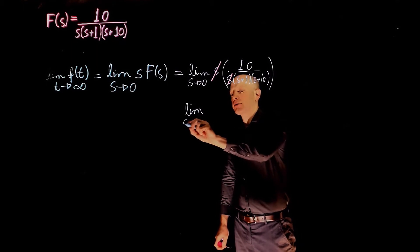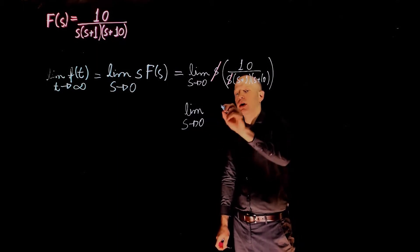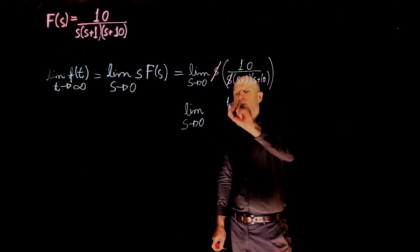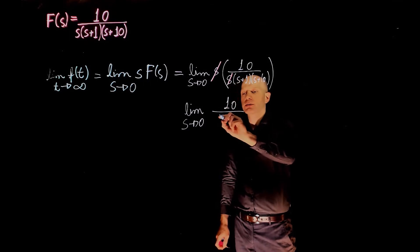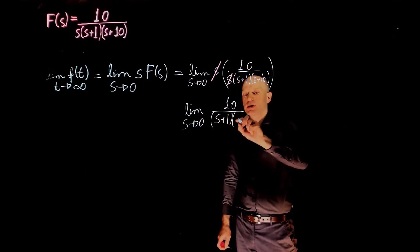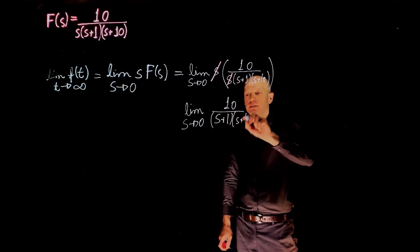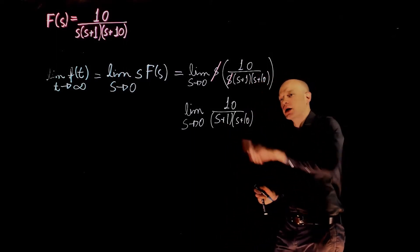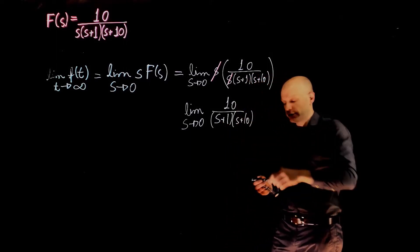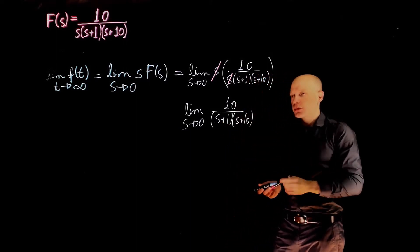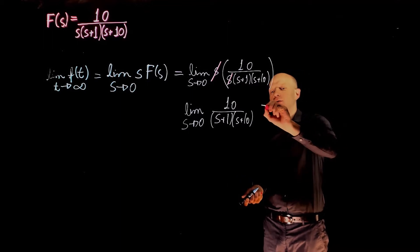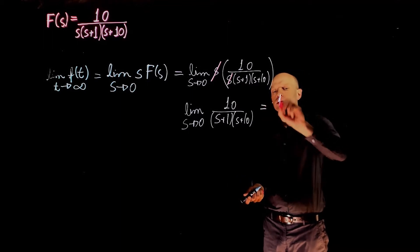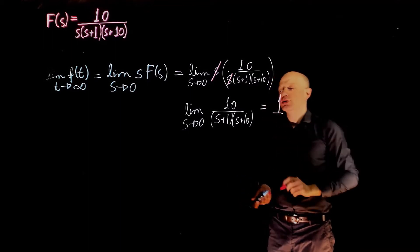When s equals 0, the s terms cancel, and we are left with 10 over 10. The final value of this function equals 1.